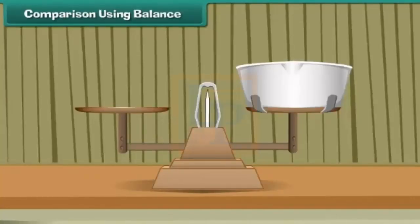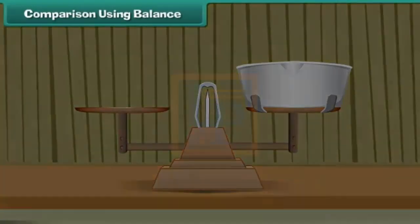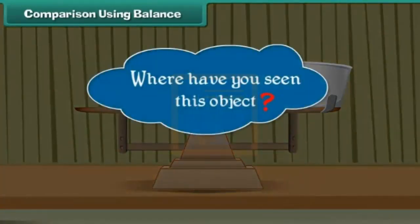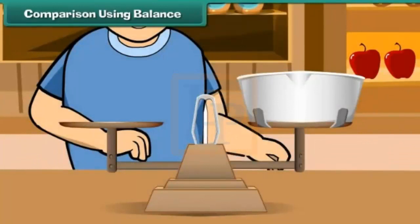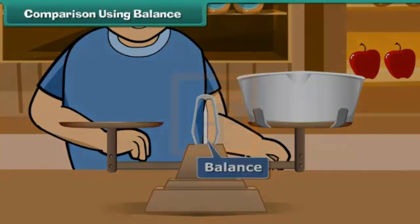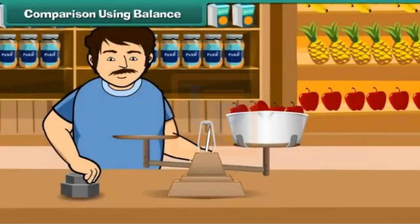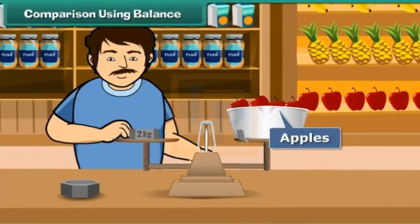Look at this picture. Where have you seen this? Yes, in shops. It is called a balance. It is used to measure weights. An apple seller weighs apples by placing the apples on one side and the weights on the other side of the balance.